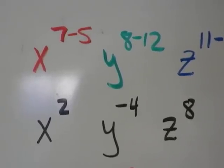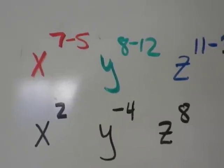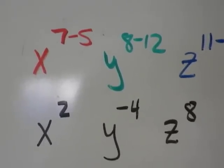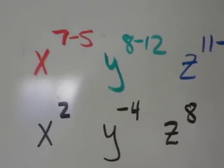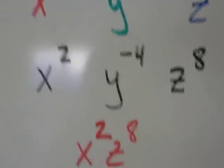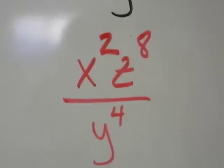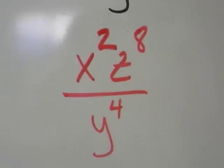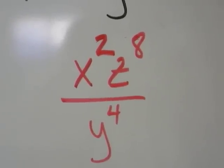Right now, the y is in the numerator. There's an invisible fraction of being over 1, so I'm going to throw the y to the 4th into the denominator, and my final answer for this problem is x squared, z to the 8th, over y to the 4th.